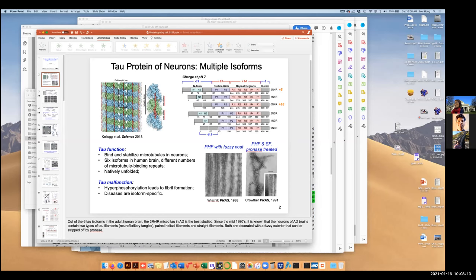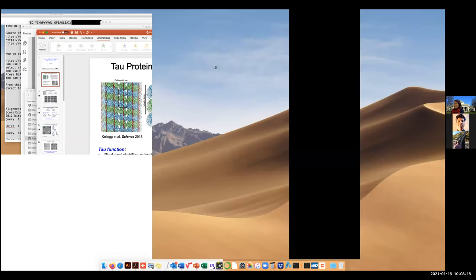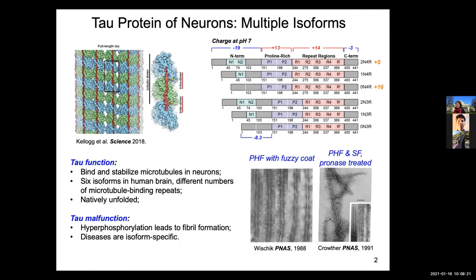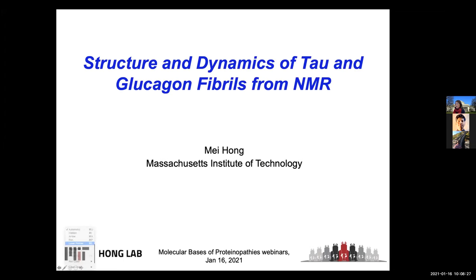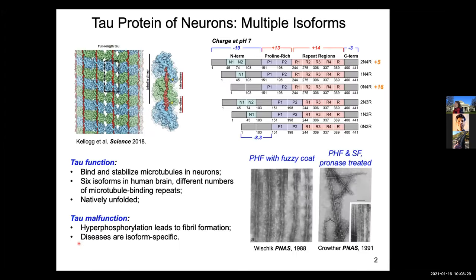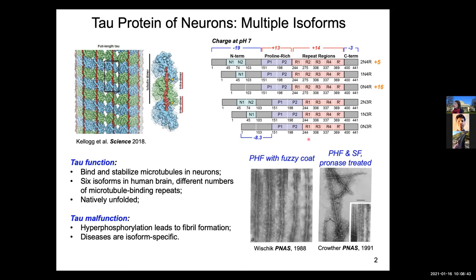There are six isoforms of tau in human brains. Three of them have four microtubule binding repeats — R1, R2, R3, R4 — and three have only three microtubule binding repeats, skipping the R2 domain. These microtubule binding repeats constitute about 25 to 30% of the protein; the rest is relatively disordered. There is also a particularly proline-rich domain of interest.